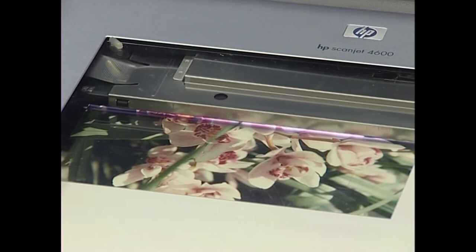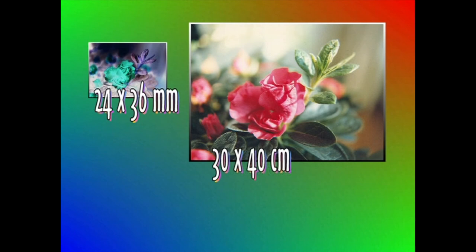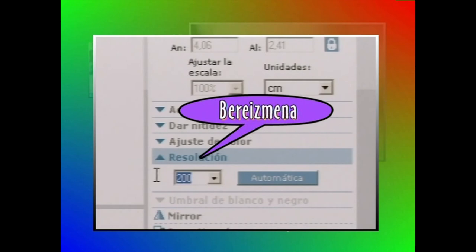Hona hemen beste adibide bat: negatibo bat. Hogeita hiru bider berrogei zentimetroko tamainako irudi bilakatu eta paperera aldatu nahi izan ezkero, zer egingo dugu? Lehenik jakin behar dugu negatiboaren tamaina: hogeita lau bider hogeita hamasei milimetrokoa dela. Formula aplikatu eta lortutako emaitza hiru mila, hirurehun eta hogeita hamairu da. Beraz, eskanerrari hori aldeko, hiru mila hirurehun eta hogeita hamairu puntu egiteko agindu behar diogu. Horrela eginda eta gainerako aginduak emanda gero, irudia digitalizatzeko moduan izango gara.